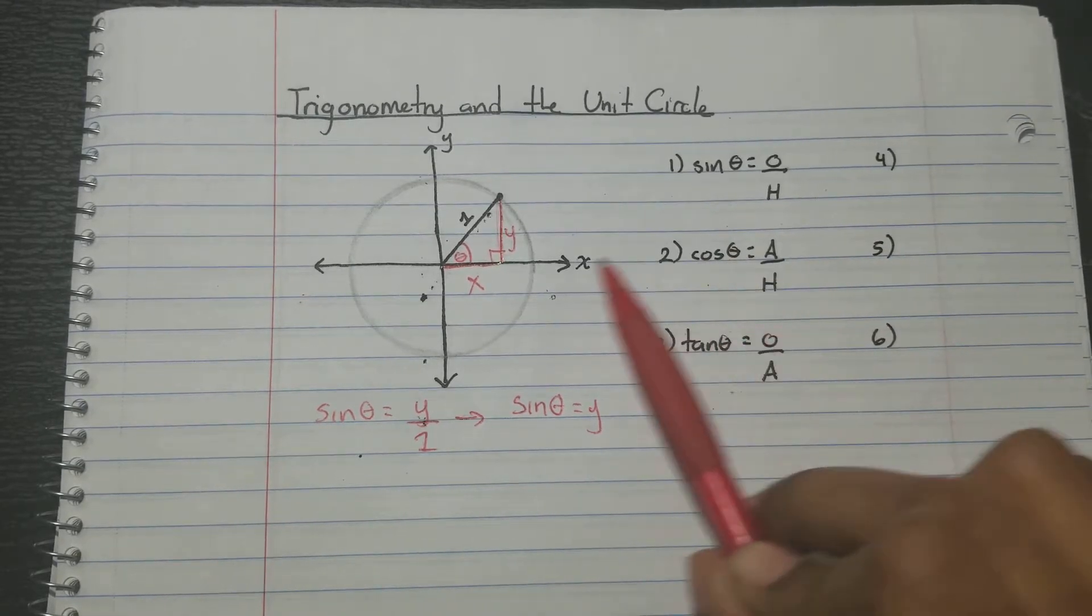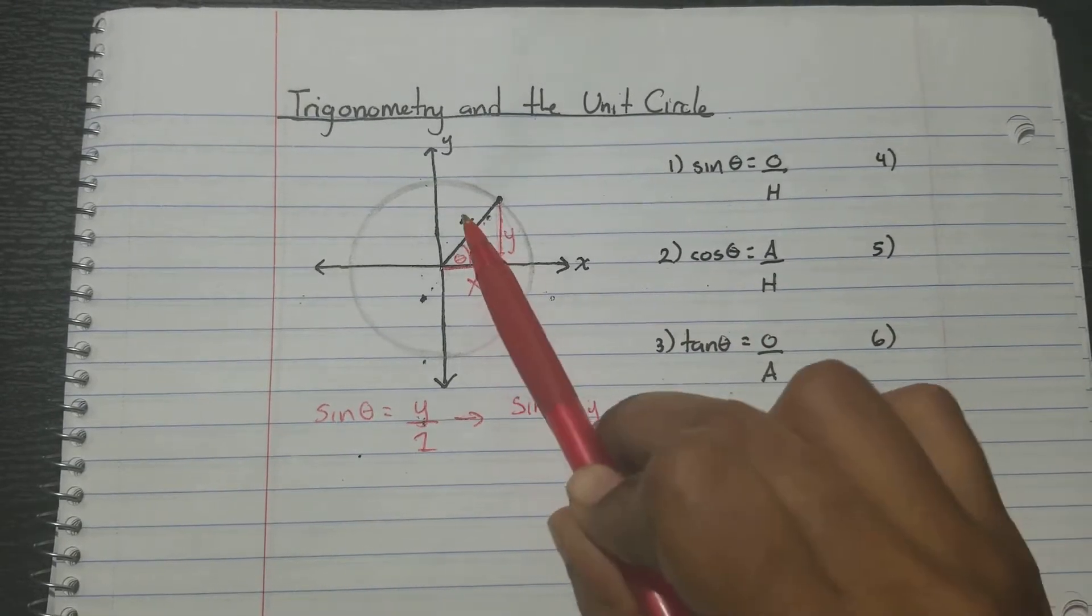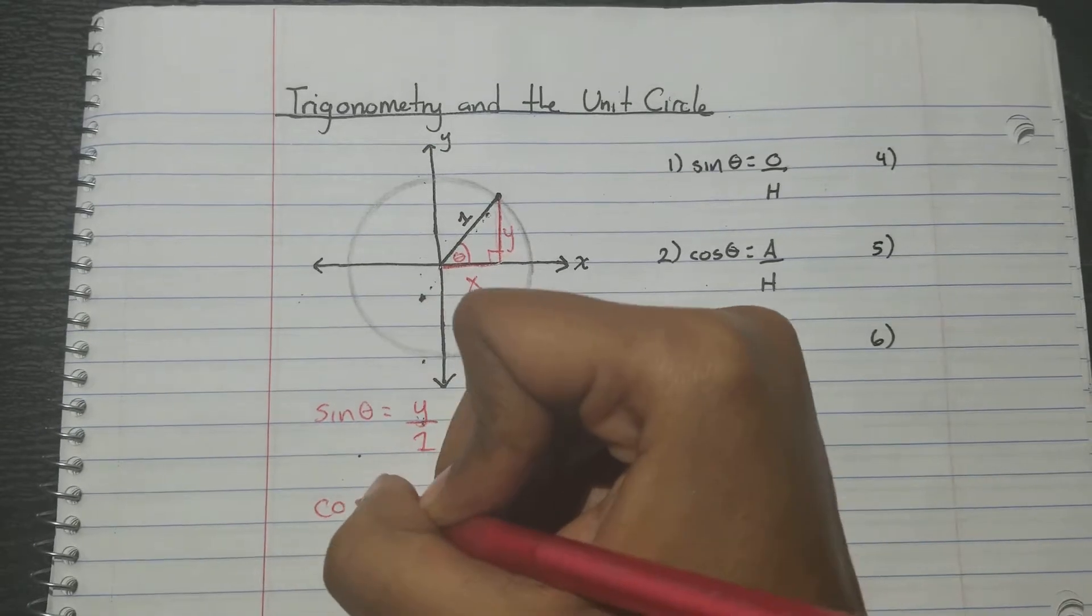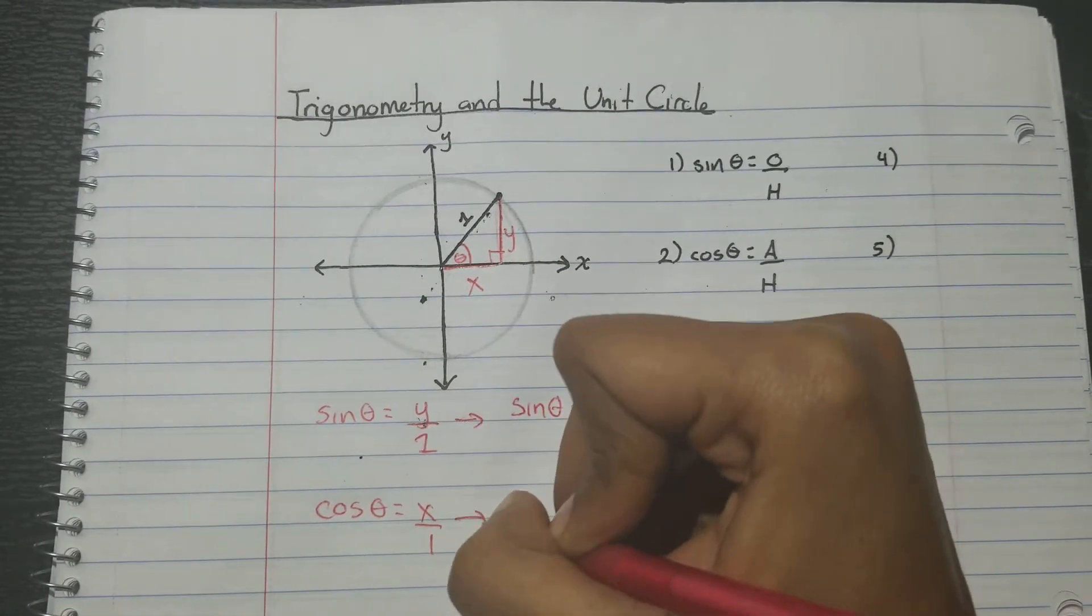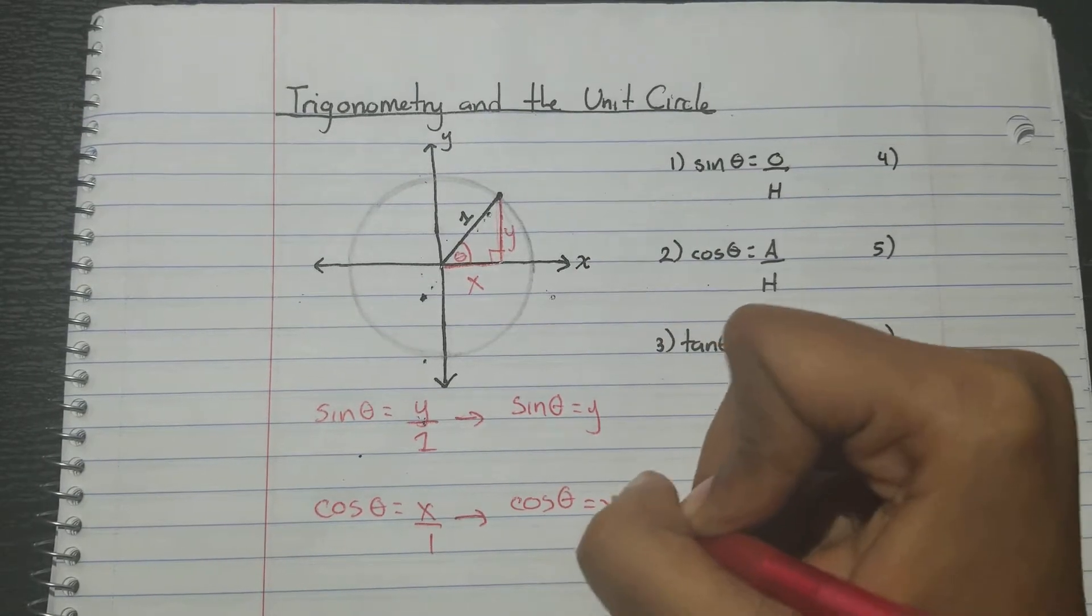Let's do cosine. Cosine theta is adjacent x over hypotenuse 1 equals x over 1. We simplify that. We get cosine theta equals x.